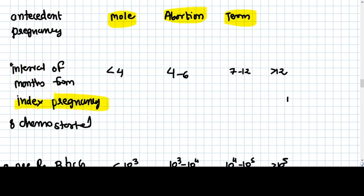Interval in months from index pregnancy to chemotherapy started: if it is less than four, that means we have started the chemotherapy within four months of having this pregnancy, then it becomes the lowest risk. If it is more than 12 months, if we have seen any molar pregnancy and then after 12 months we have started the chemotherapy, that 12-month time the GTD has invaded to all the tissues, so it is a very high risk.